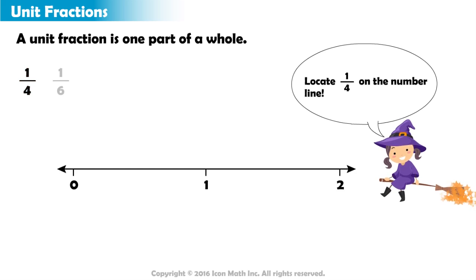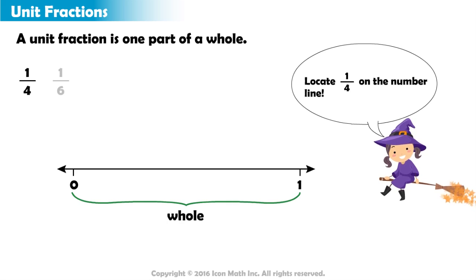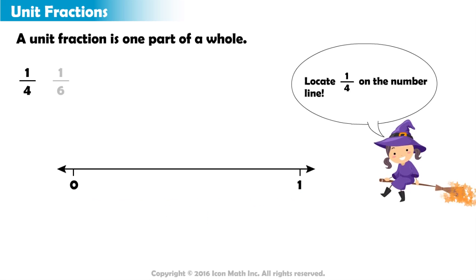Here is a number line from zero to two. Since we are working with one whole, we only need to look at the space between zero and one. The entire length of the space from zero to one is a whole. If we divide this space into four parts of equal length, then the whole will be made up of four equal parts.